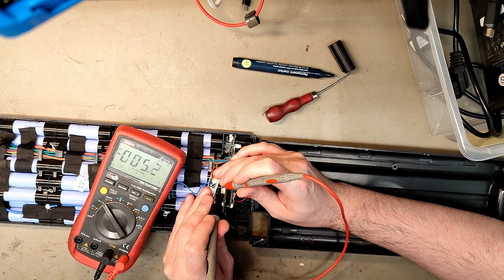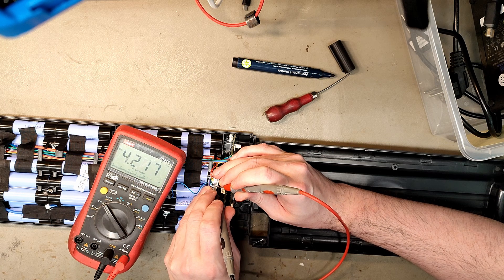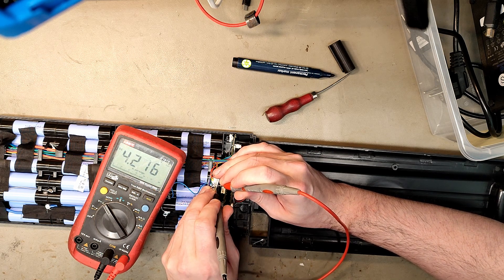Most cells are 4.1V. Here we have one that is high, fully charged at 4.2V, no problem. Then we have a low one at 3.8V, that's the one we're gonna fix.